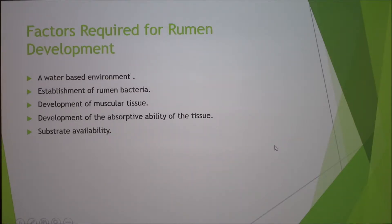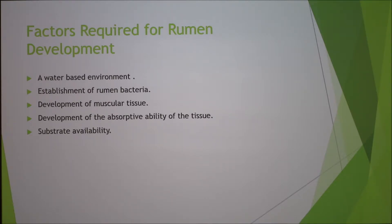The factors that are required for the development of the rumen are a water-based environment, establishment of rumen bacteria, development of muscular tissue, development of the absorptive ability of the tissue, and substrate availability.